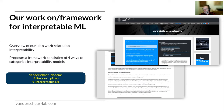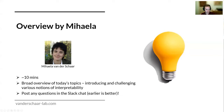Before I hand over to Mihaela, I'd like to draw your attention to a write-up on our lab's website. You can find this in our research pillars section. It presents an overview of our lab's own work related to interpretability, but perhaps more importantly, we present a framework consisting of four different ways to potentially categorize interpretability models. This is an area that's in flux and constantly being discussed, so this is just one of potentially many ways to see such models. Go to our website, click research pillars, and then interpretable ML.